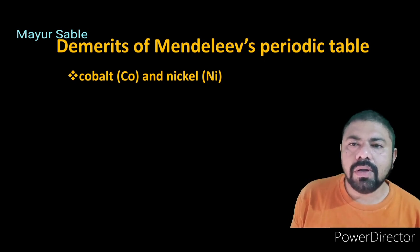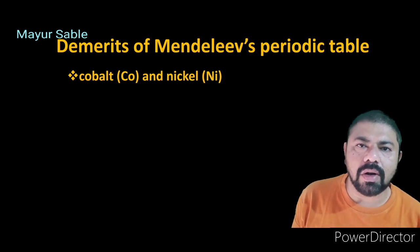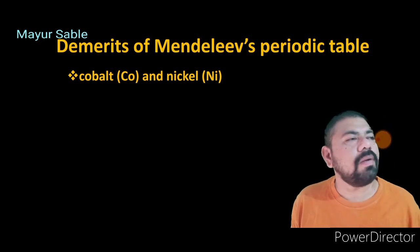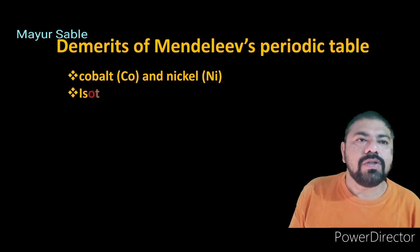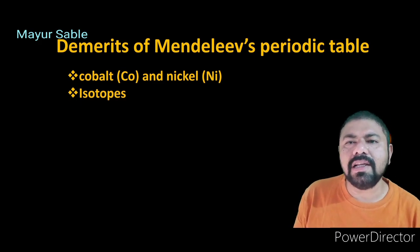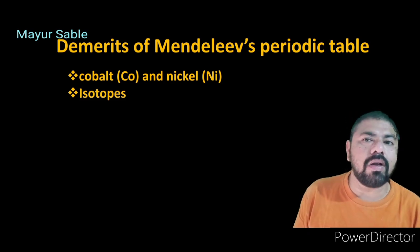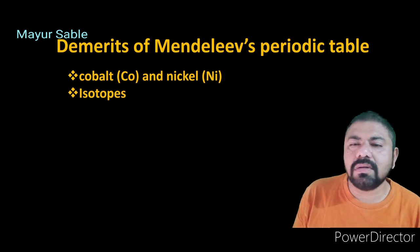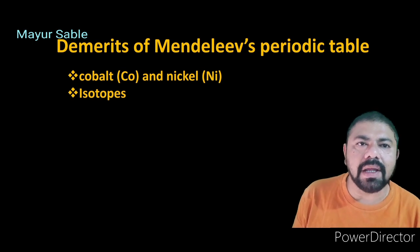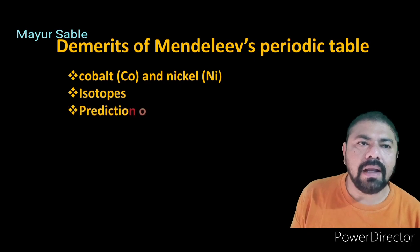Now we study the demerits of Mendeleev's periodic table. Mendeleev arranged elements in increasing order of atomic masses. The first demerit concerns cobalt and nickel, whose whole-number atomic masses are the same. Therefore, Mendeleev was unable to give them a proper place according to increasing atomic mass order, creating ambiguity in the sequence of cobalt and nickel.